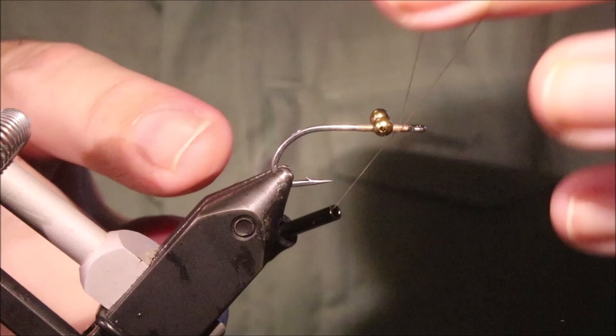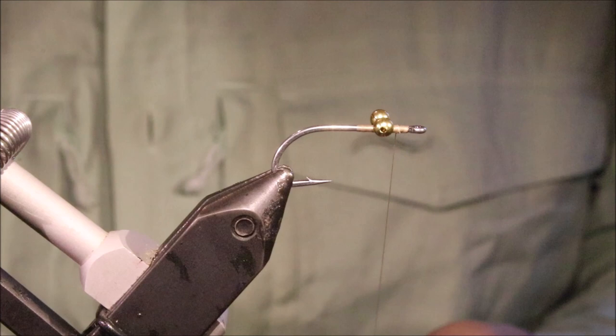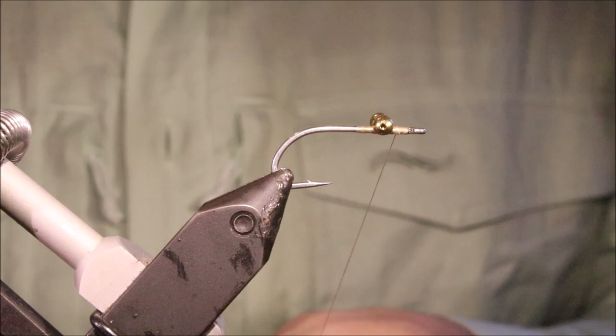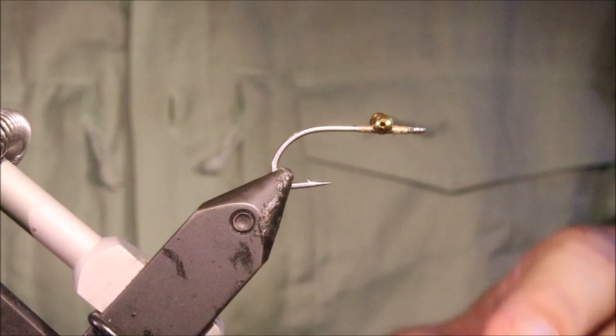So I'm not too worried about taking lots of wraps here. Just get the eyes on, make sure they're square. And then obviously trim away the waste thread.